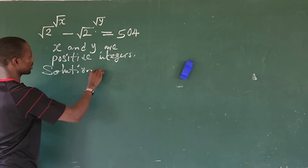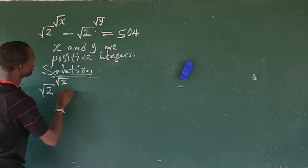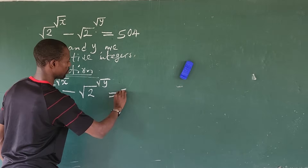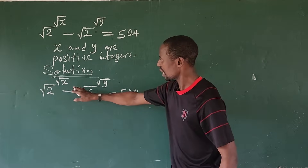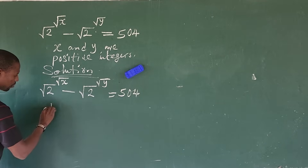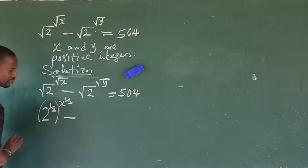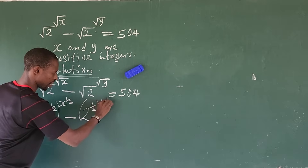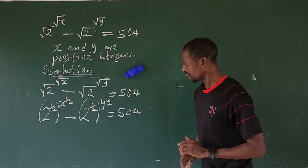Let's put down our solution. The question is: the square root of 2, raised to the square root of x, minus the square root of 2, raised to the square root of y, equals 504. The first thing we do is rewrite the radicals. We now have 2 to the power of 1/2, raised to x to the power of 1/2, minus 2 to the power of 1/2, raised to y to the power of 1/2, equal to 504.